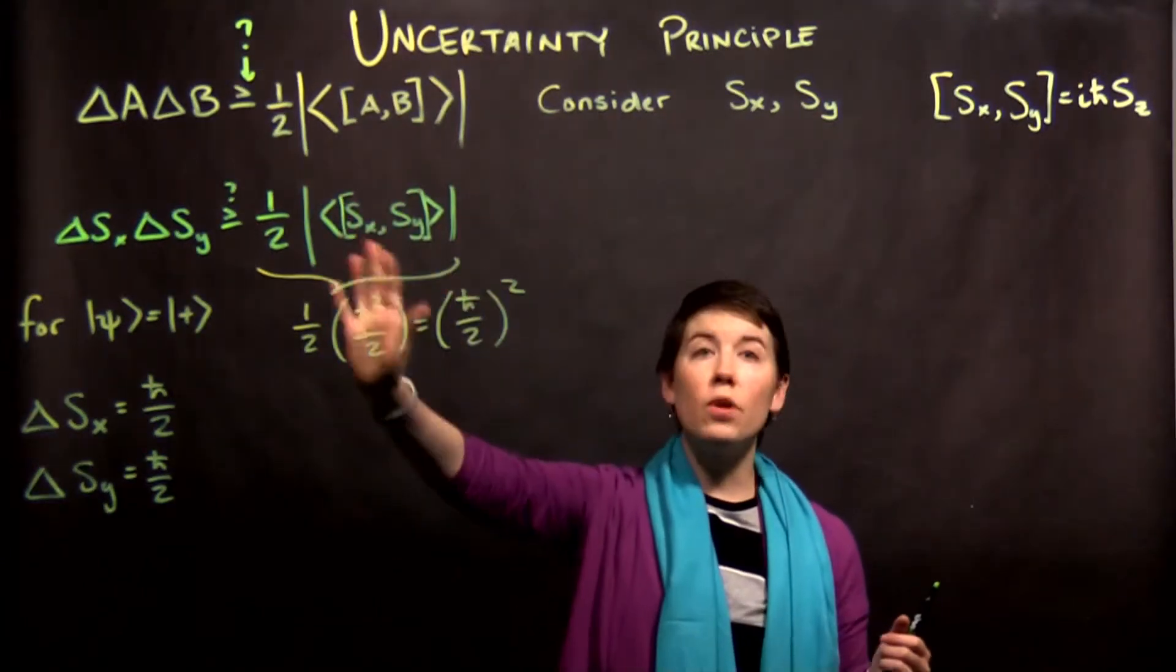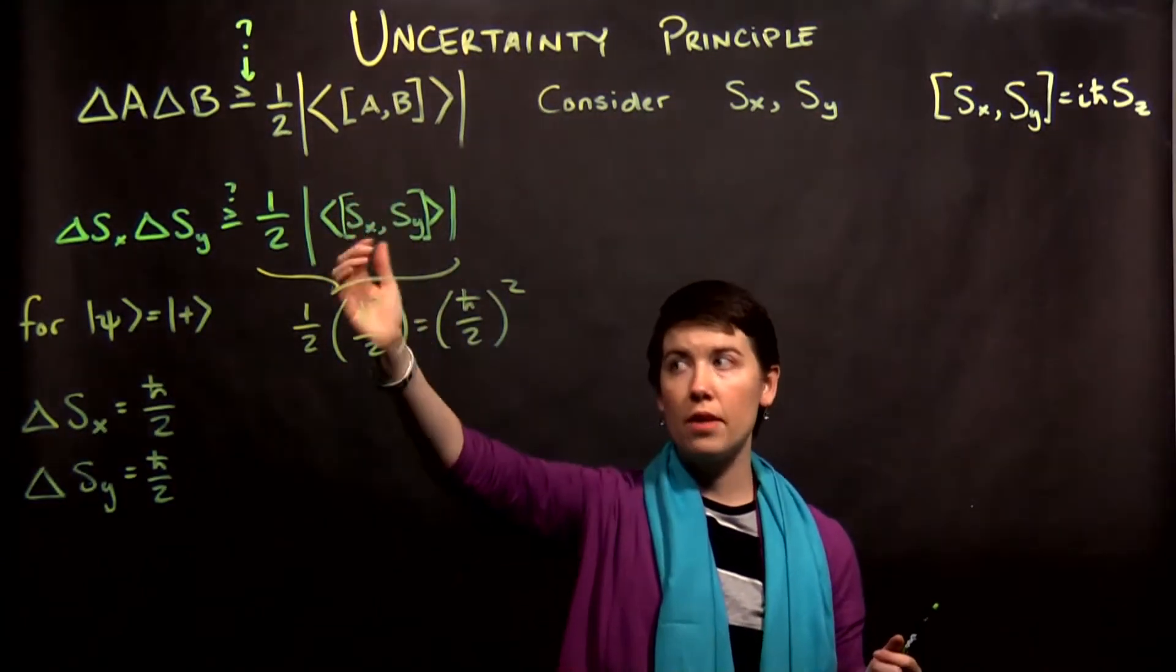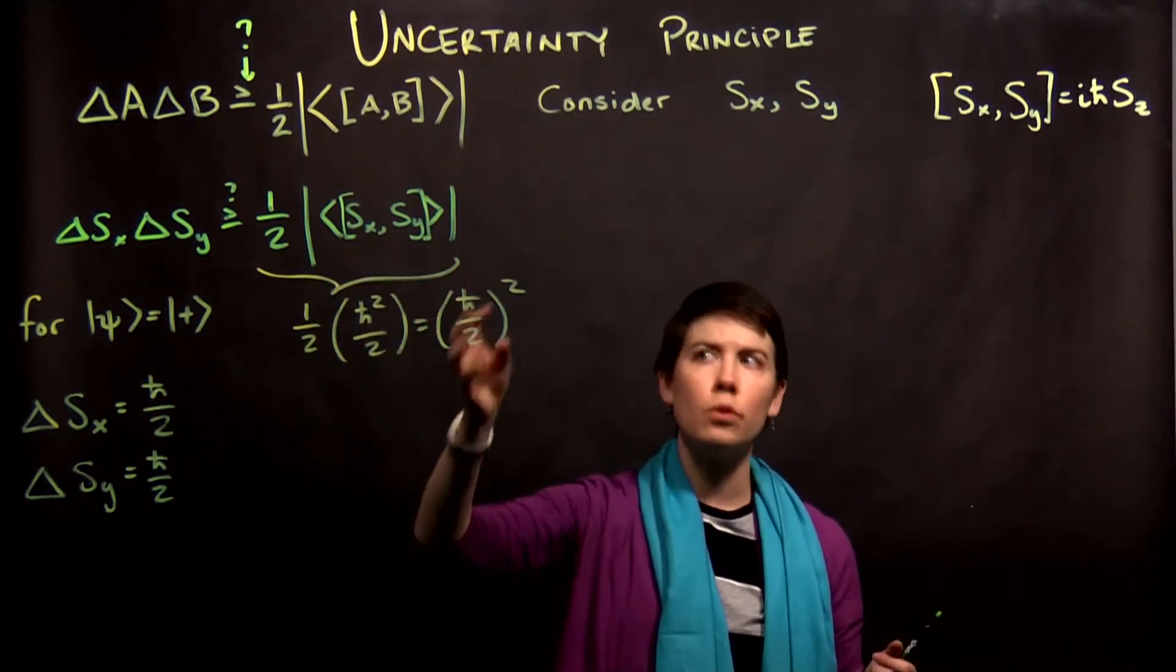In the previous video, I showed what this works out to be, and we can write that as 1 half h bar squared over 2 or h bar over 2 squared.